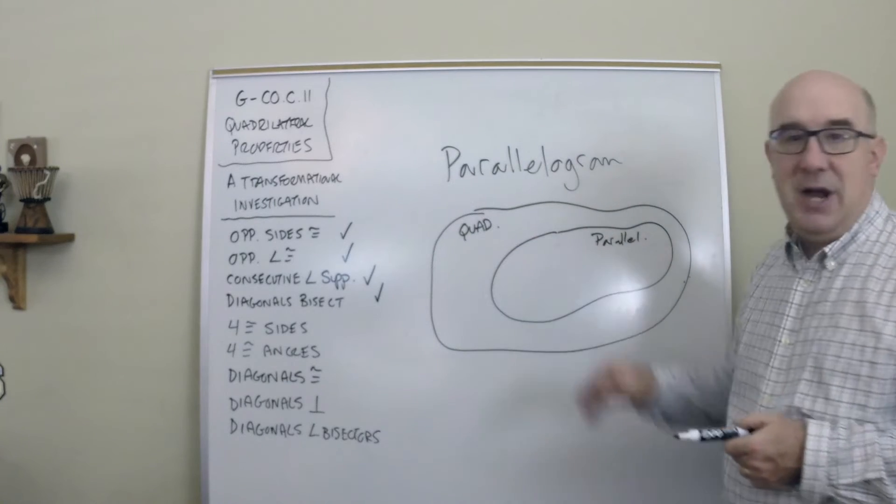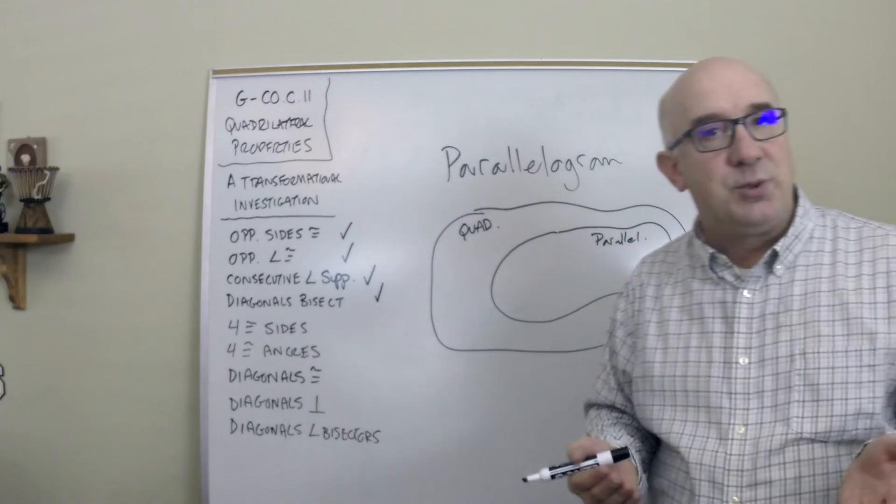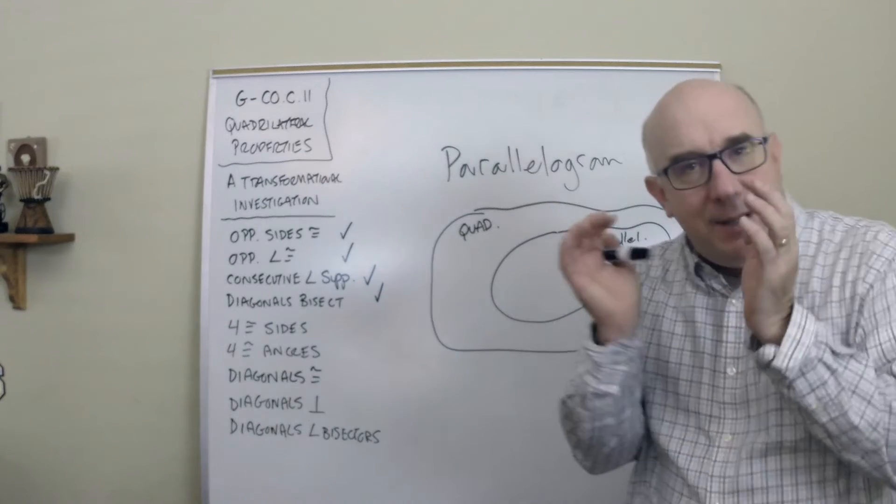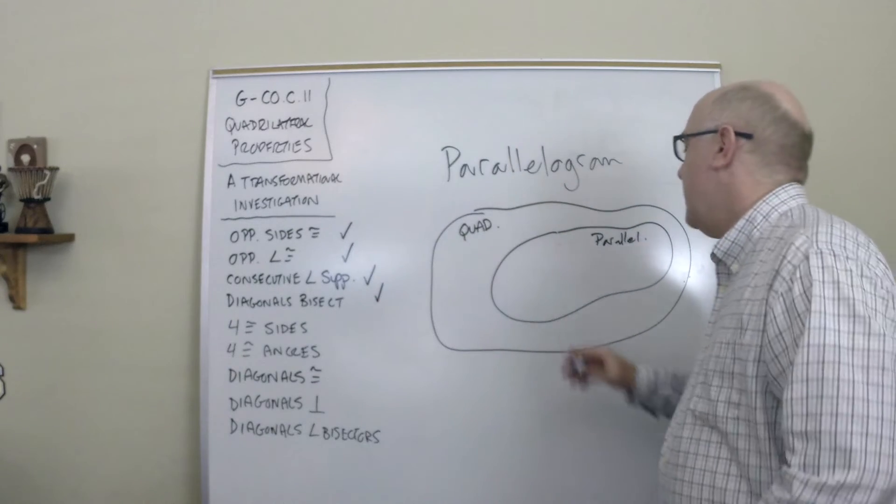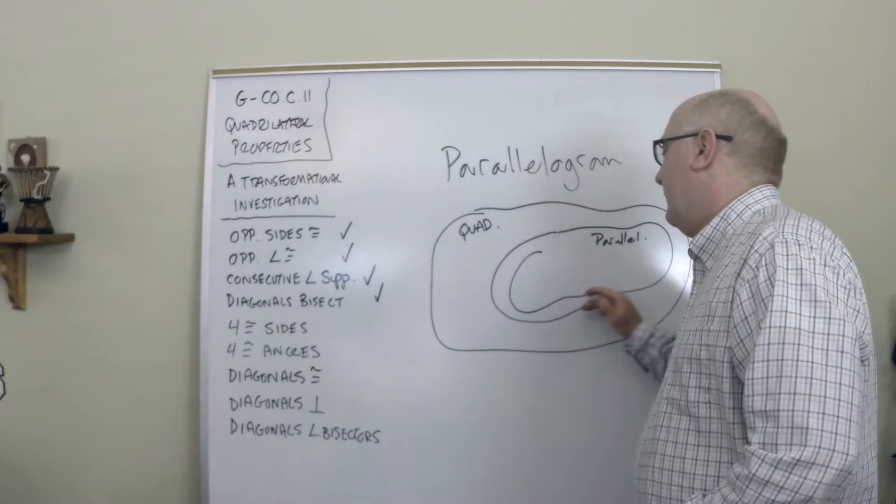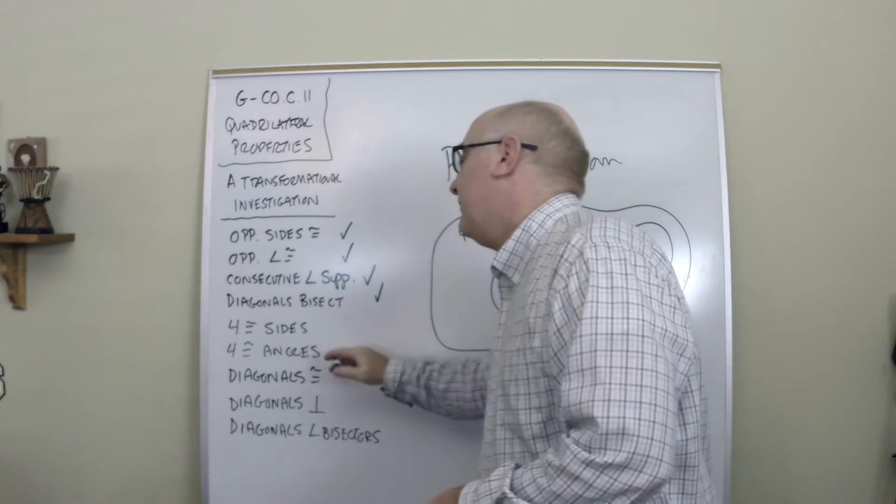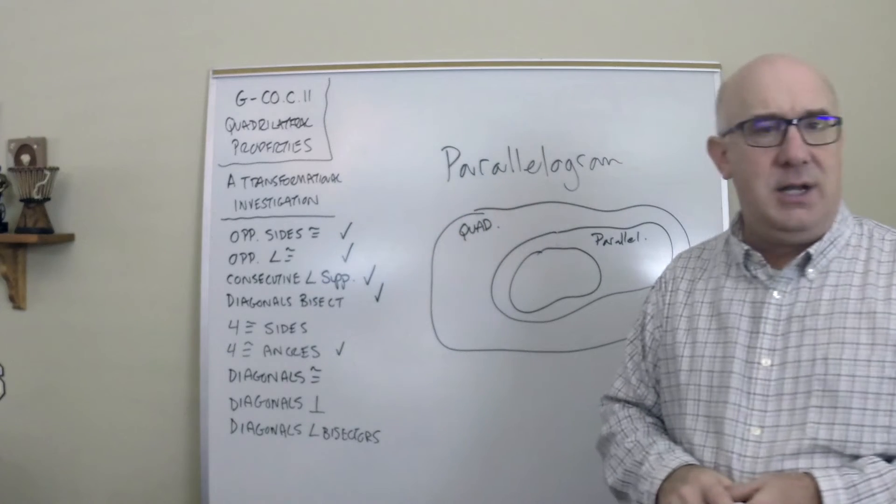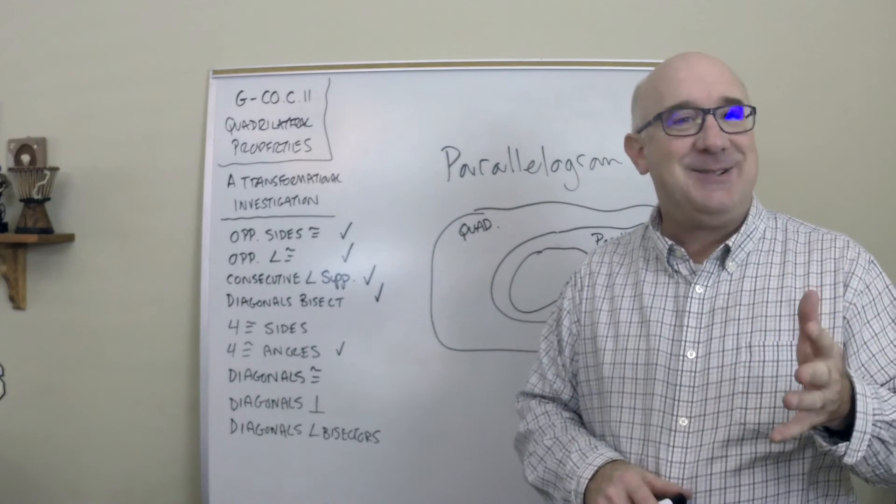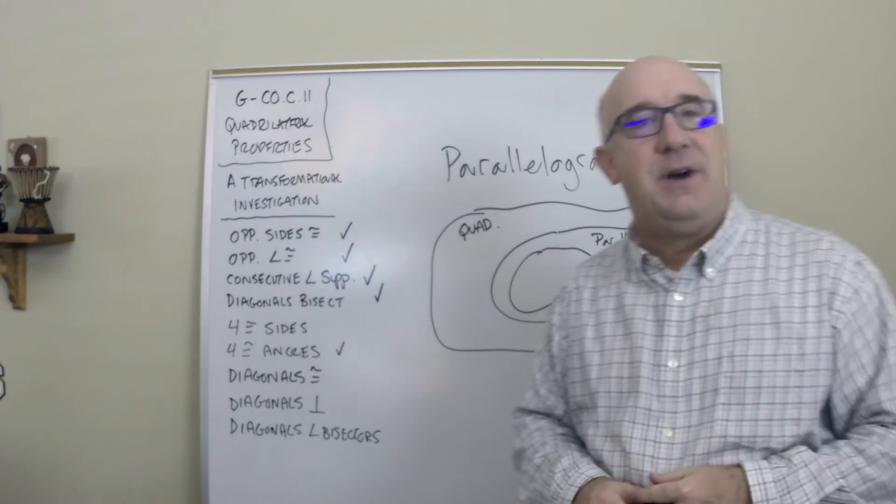Everybody in this boundary has those properties, but some in that boundary are even more specific. Some not only have these properties but all four of their angles are equal—that is a rectangle.